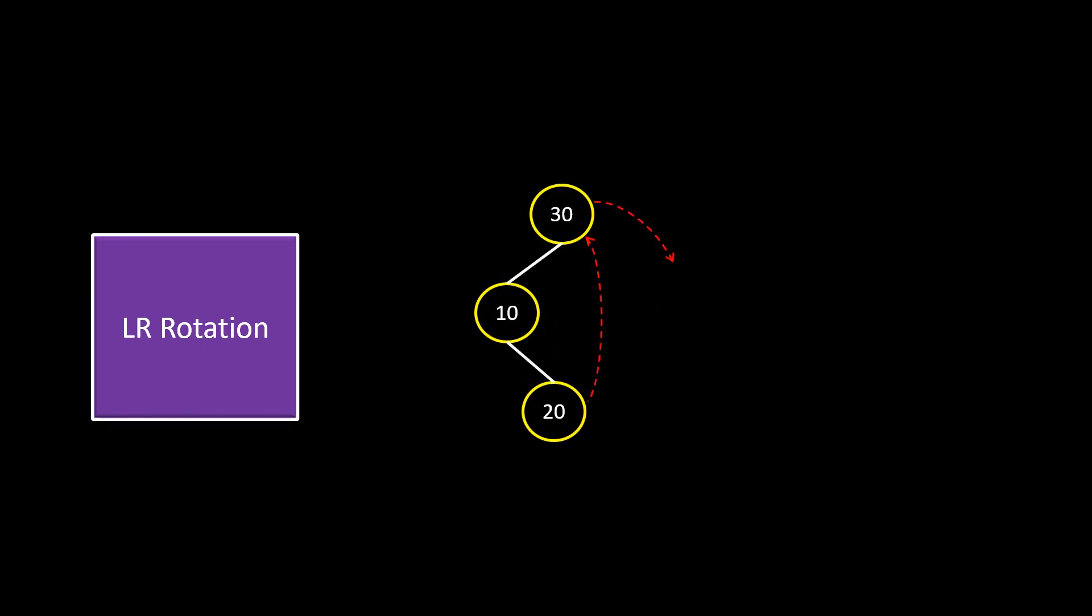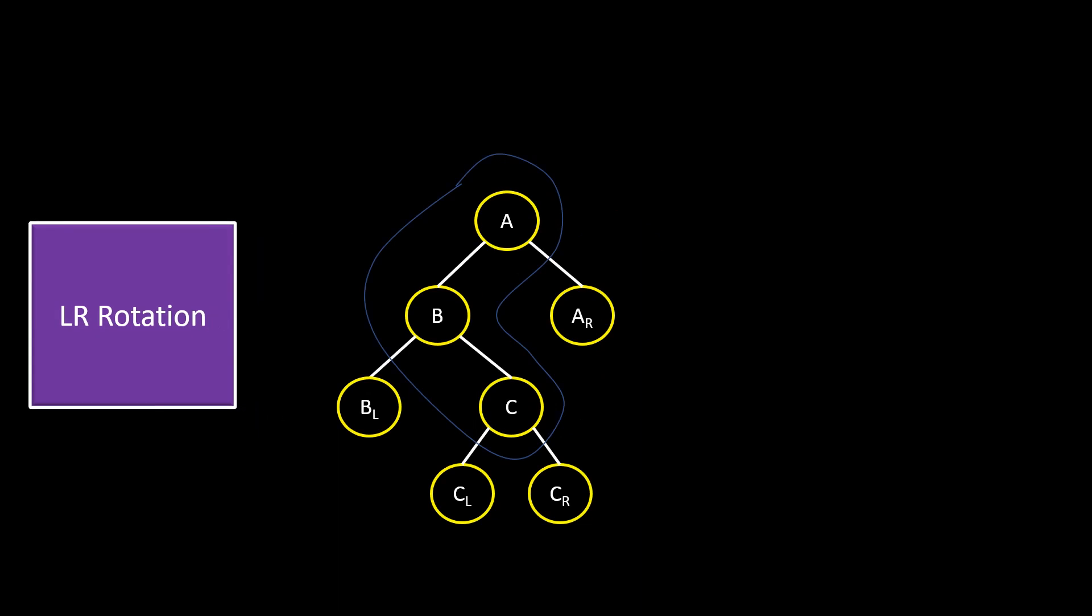If we see carefully, the double rotation attaches the right node to the root and then the root becomes the right of the newly attached node. Let's take this bigger tree. Here, we need to focus on ABC which makes this LR rotation. So, C goes to root and A goes to right of root. Left of B and right of A goes in the respective positions, while the left of C goes in the right of B and the right of C goes in the left of A.